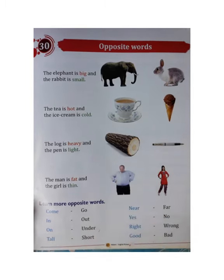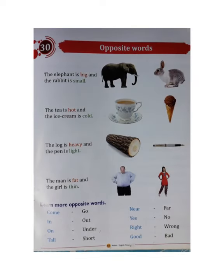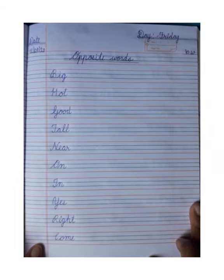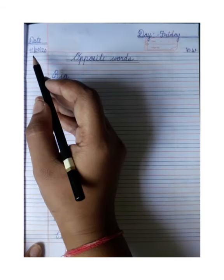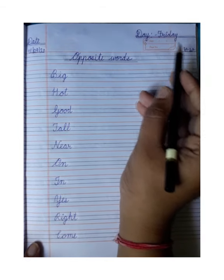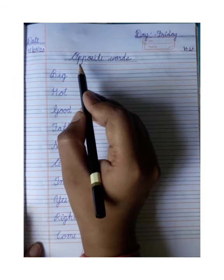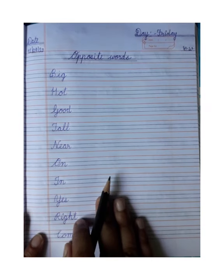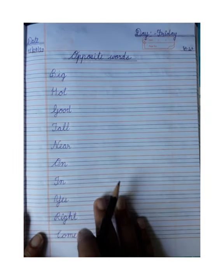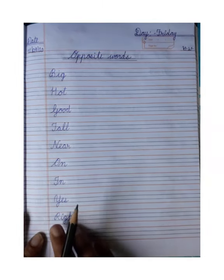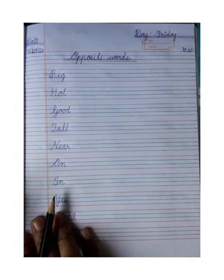Now I am showing you your English notebook. You will mention the date. Today's date is 11th September 2020. Today is Friday, then as W. Then the topic is opposite words, and draw the underline. You can see I have already written some spellings here, and we will write the opposites of these spellings.